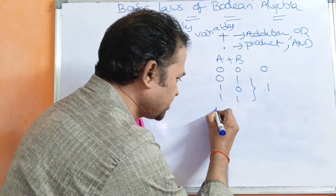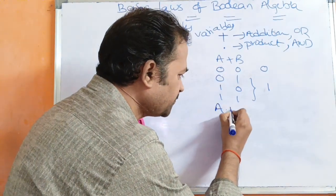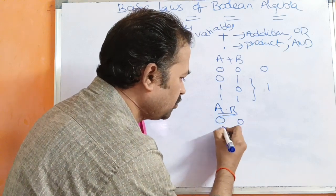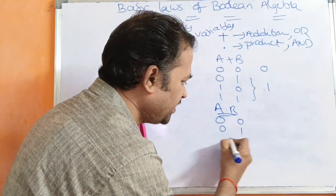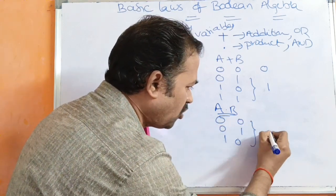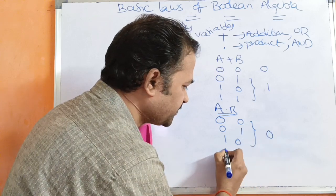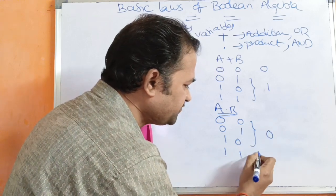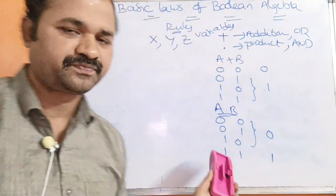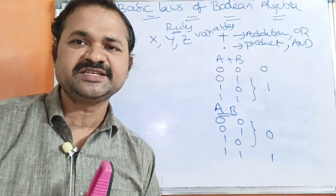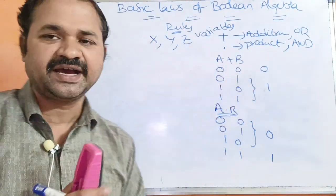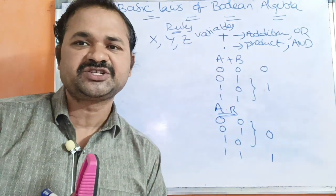Next, AND operation means product operation. For AND, inputs 0·0, 0·1, and 1·0 all give output 0. Whereas if both inputs are 1 and 1, then the output is 1.